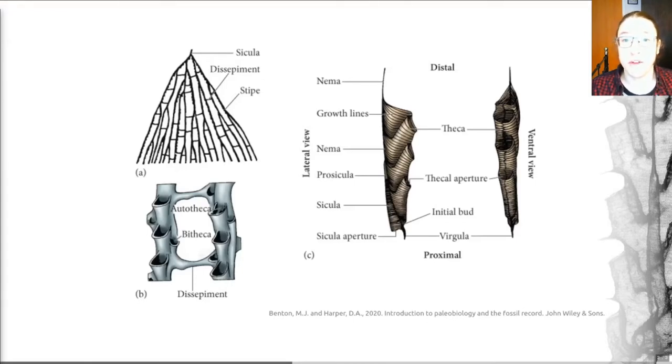The colony comprises a series of branches. That's true of all graptolite colonies, though that number of branches can be one. These branches are called the stipes. The stipes may be isolated, they may dangle freely, or they can be linked together by lateral struts as shown in this example. These are called dissepiments, similar to the name for cross bits in corals, though not necessarily homologous.